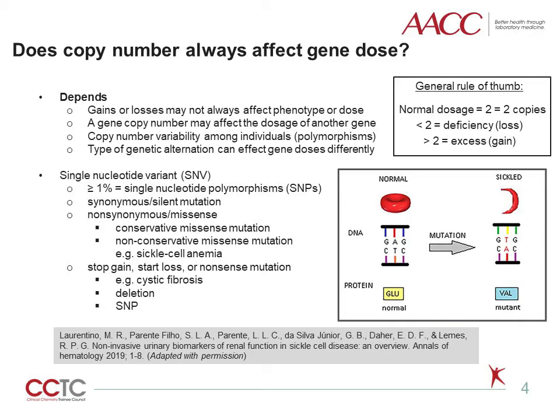Stop, gain, start, or loss — nonsense mutations — occur when the nucleotide substitution results in a stop codon that consequently results in either premature protein truncation, a non-functional protein, a reduction in protein production, or in the worst-case scenario, the elimination of protein production altogether.